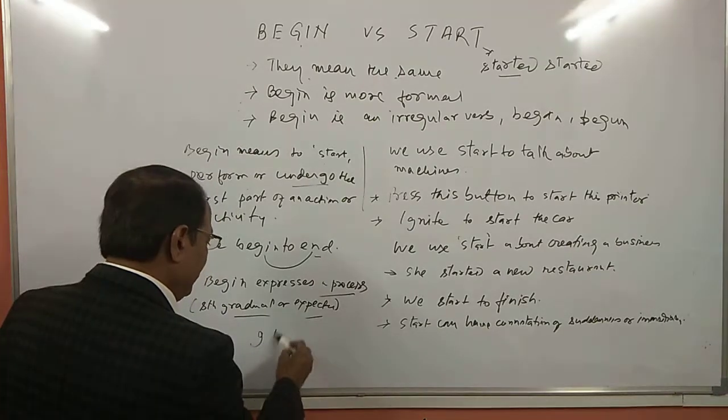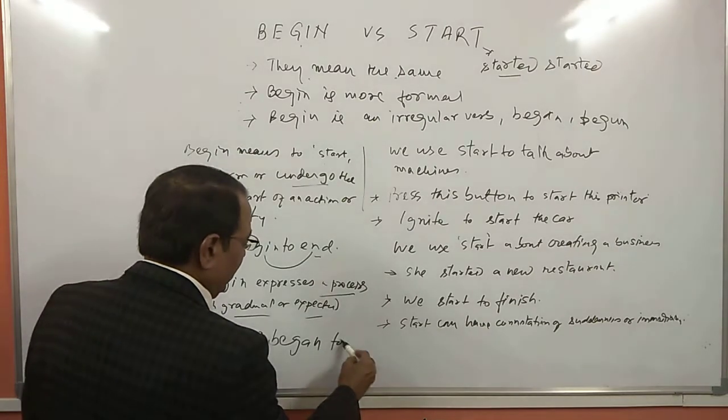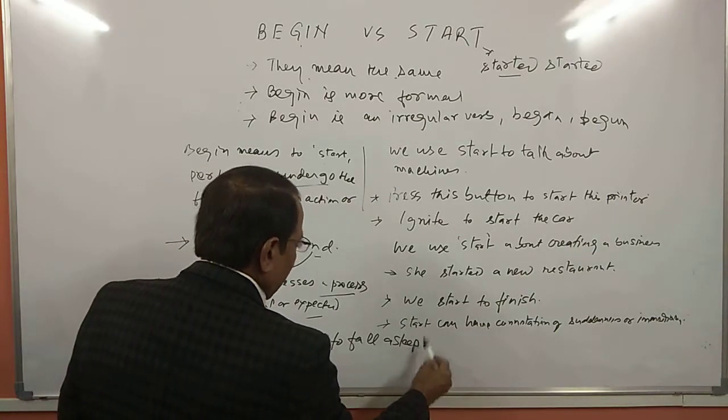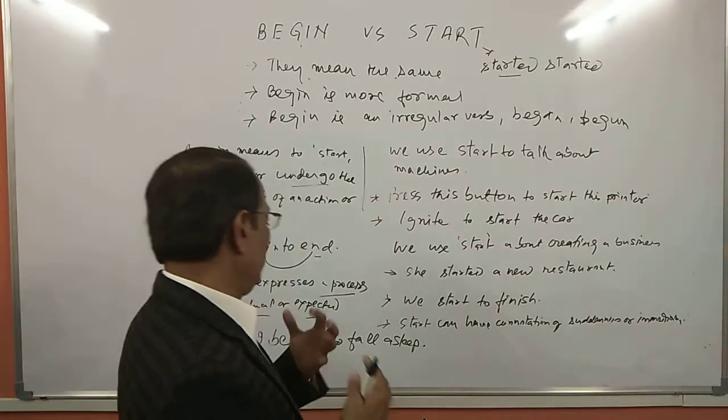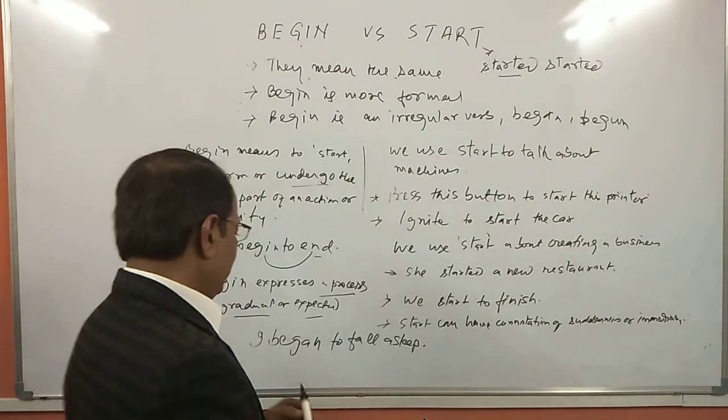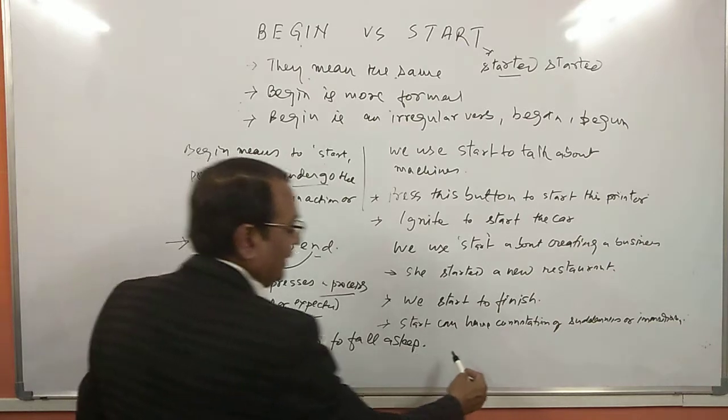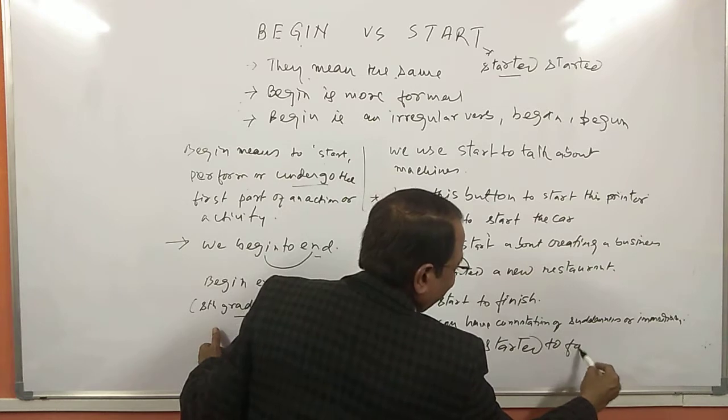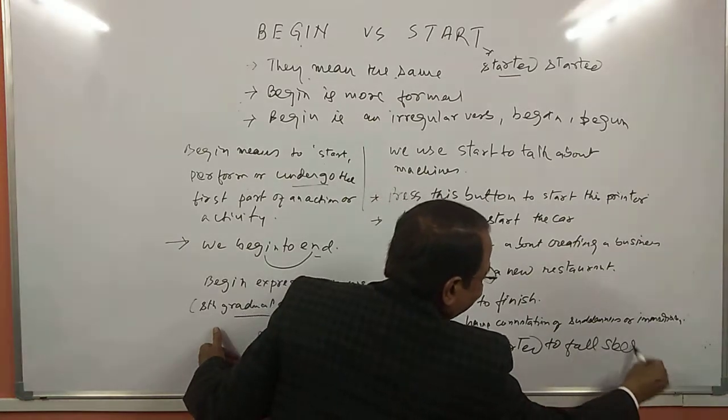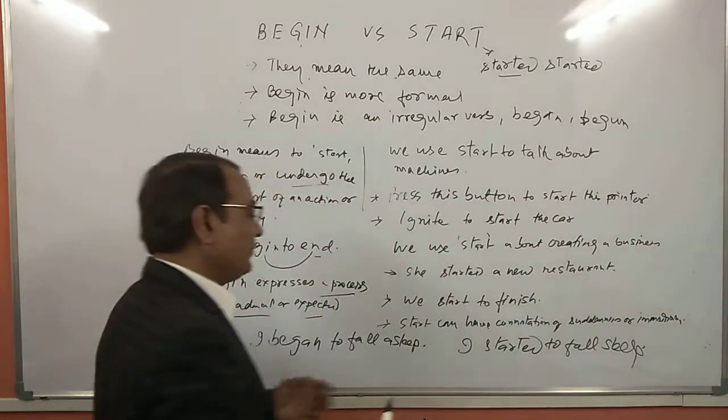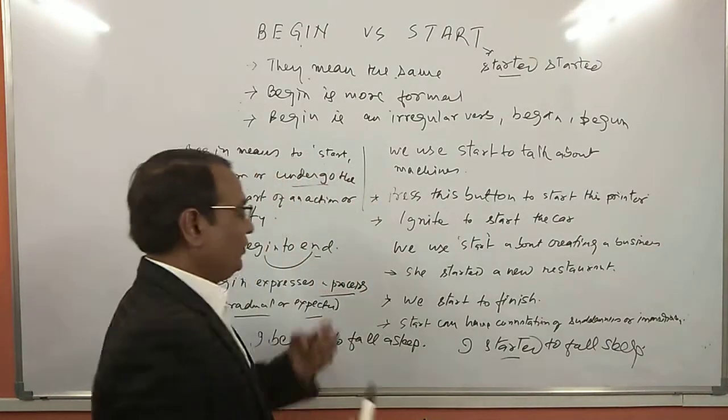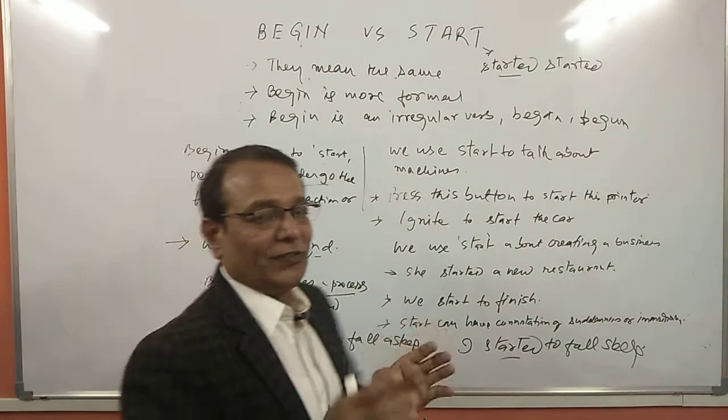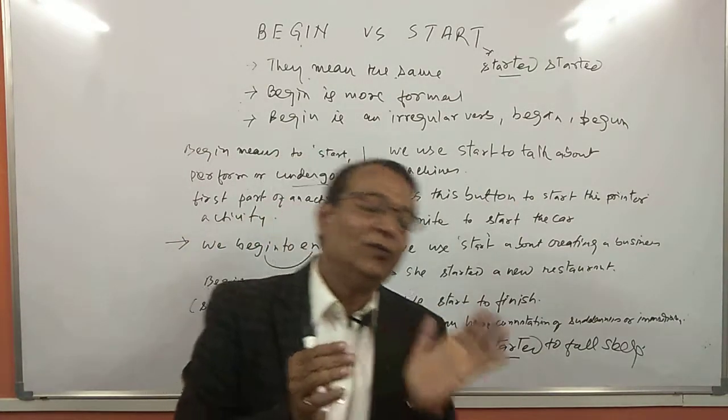Suppose if I write two sentences. If I write here, I began to fall asleep. Maybe I was tired and I was expecting to—when you go to bed, you are expecting to sleep. And you say, I began to fall asleep. If you say, I started to fall asleep, here it is expressing some sort of suddenness. When you are using started language here, it shows some sort of suddenness. When we are using began to fall asleep, it's a process.